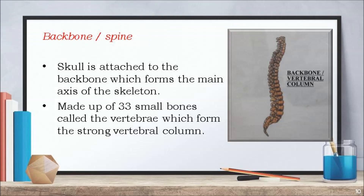The backbone or the spine. The skull is attached to the backbone which forms the main axis of the skeleton. The backbone is made up of 33 small bones called the vertebrae, which form the strong vertebral column.